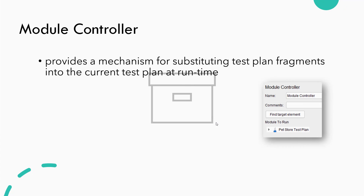Module Controller provides a mechanism for substituting test plan fragments into the current test plan at runtime. To understand better, let us see a quick example where we have the pet store test plan. Once you add the Module Controller anywhere in your test plan, it will display the tree view of your thread group and its controllers.